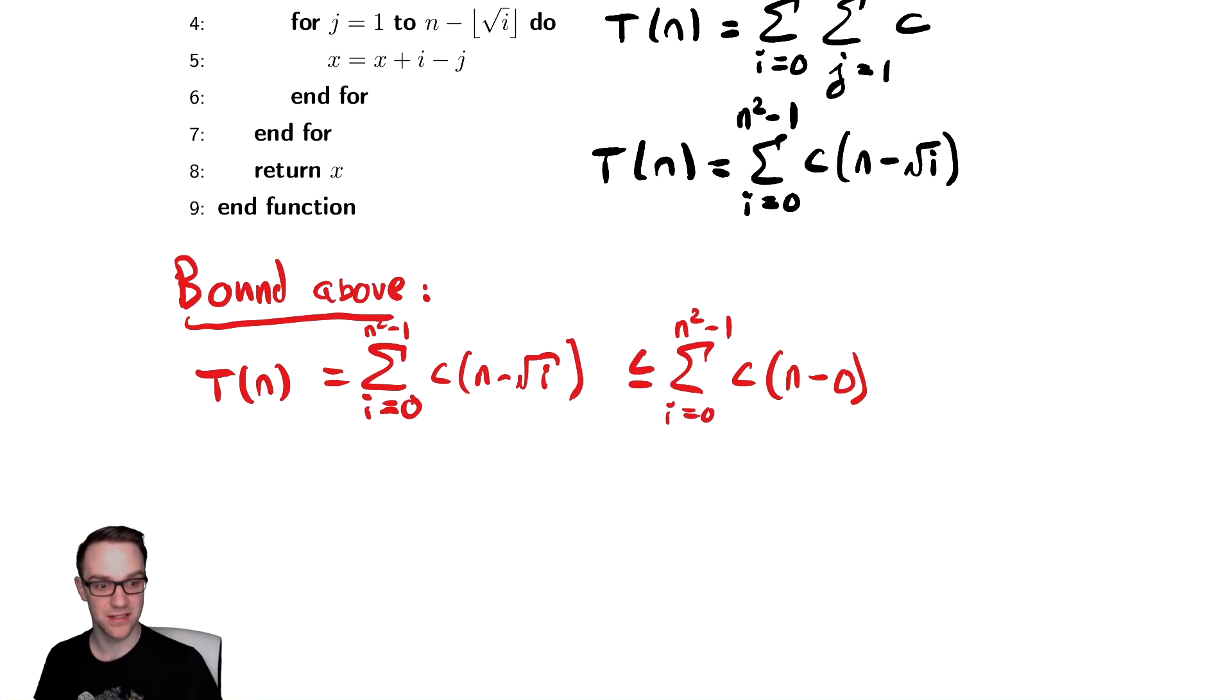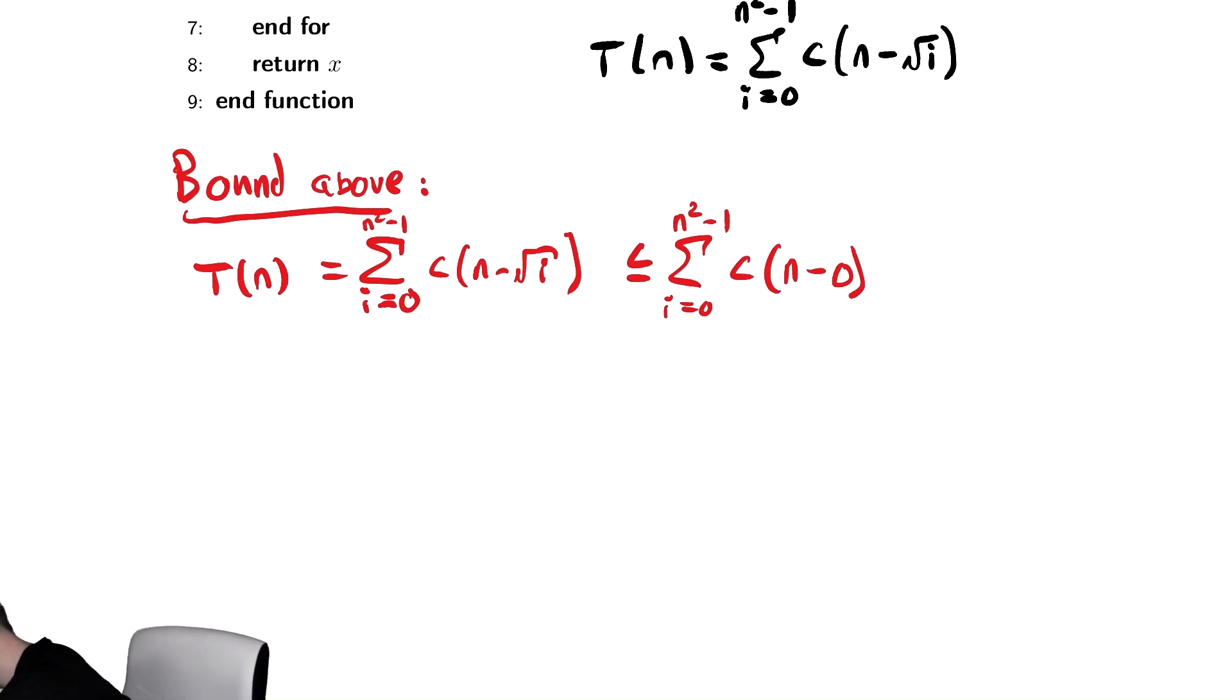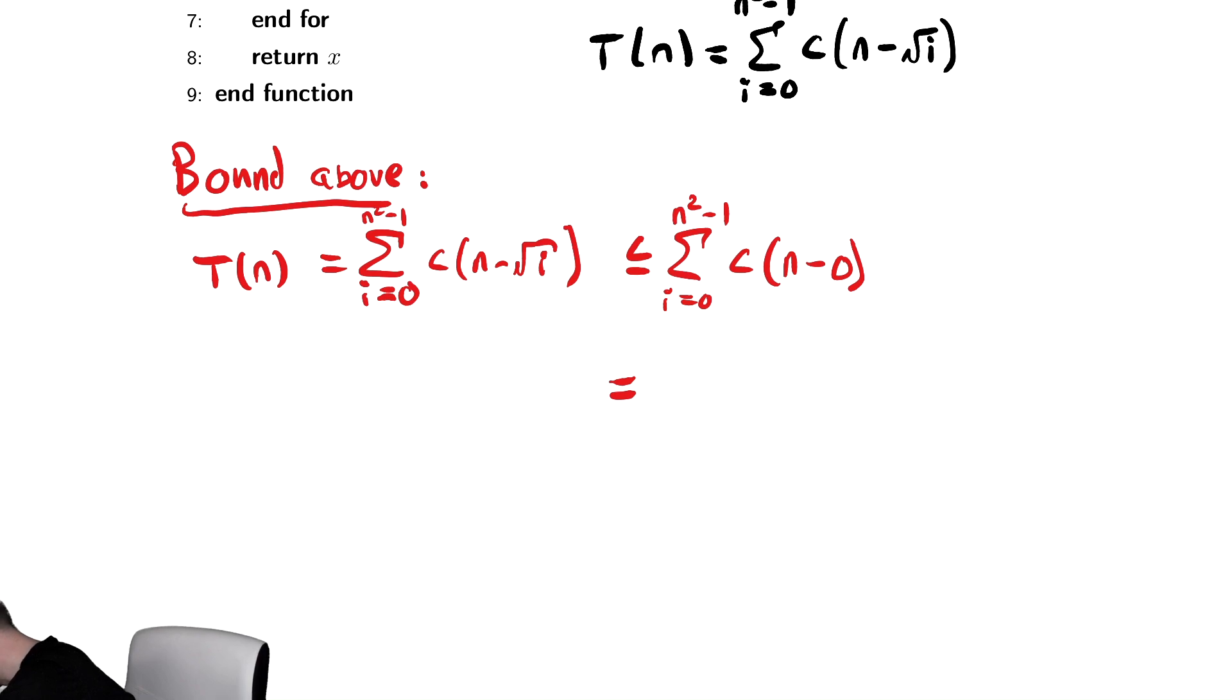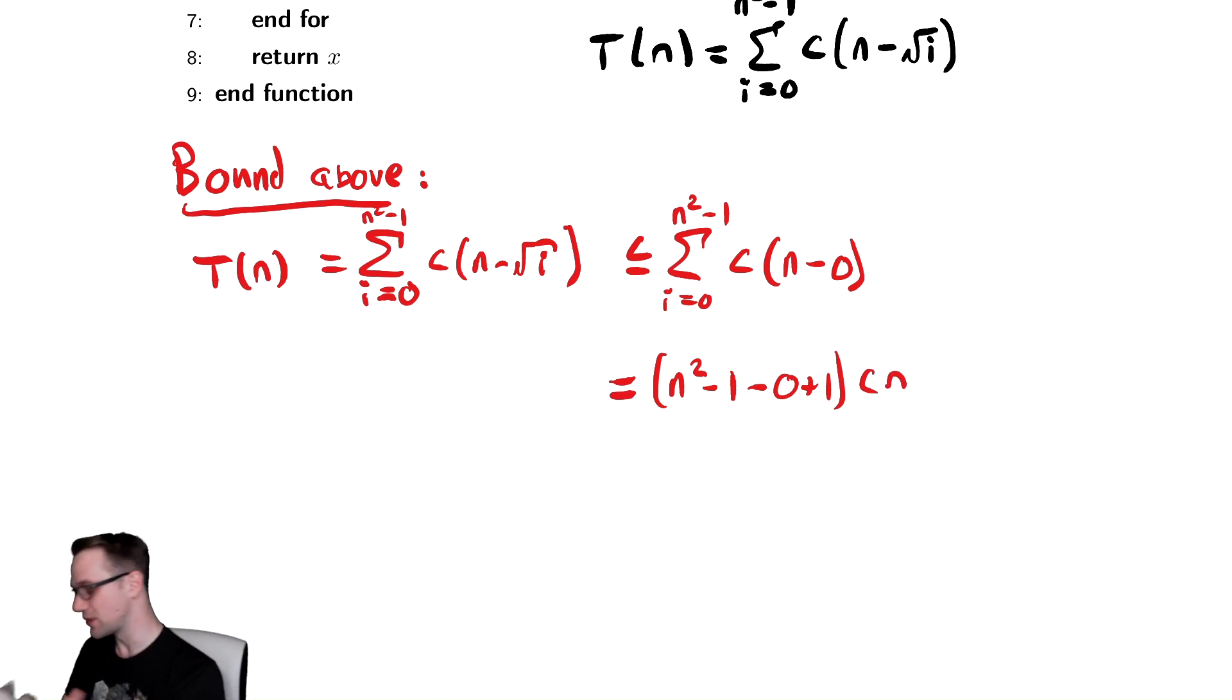And now we have a nice summation. There's no more i inside of the summation, so we have a fixed quantity that we are adding up a fixed number of times. So this is equal to the top bound minus the bottom bound plus 1 times the inside, which is just cn. Everything cancels out in a really nice way here, and I have n squared times cn. That's really convenient. This is equal to cn cubed. Hopefully that's not so bad. The only thing to be careful of is that it is decreasing, so make sure you plug in the correct value for i.